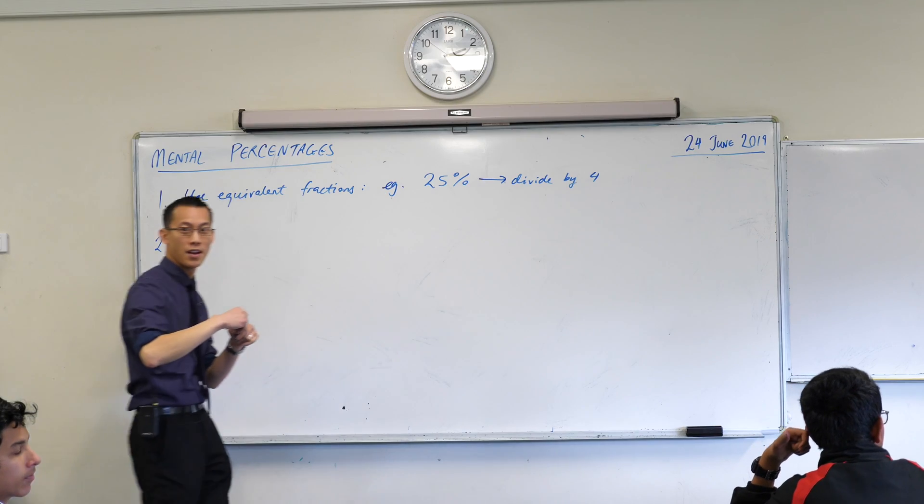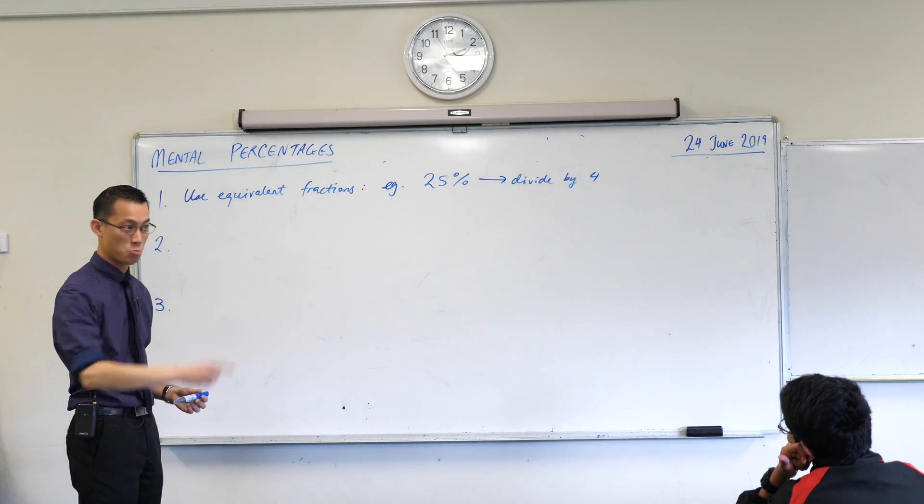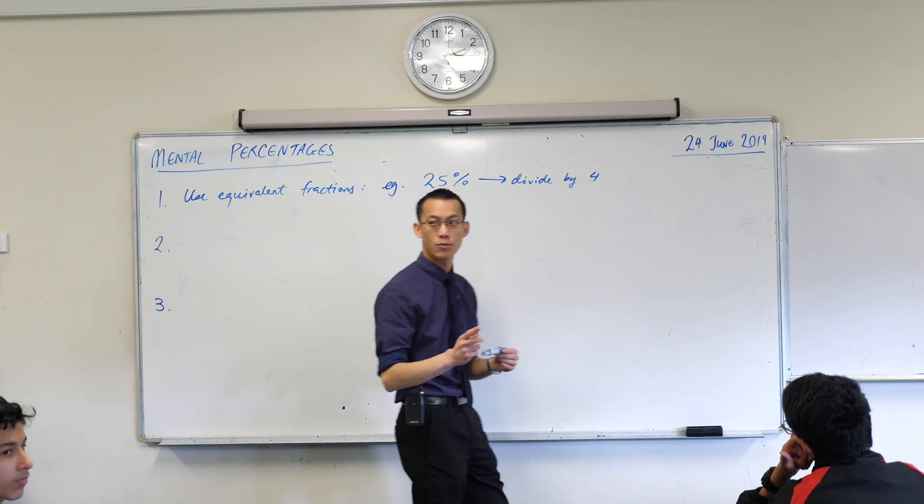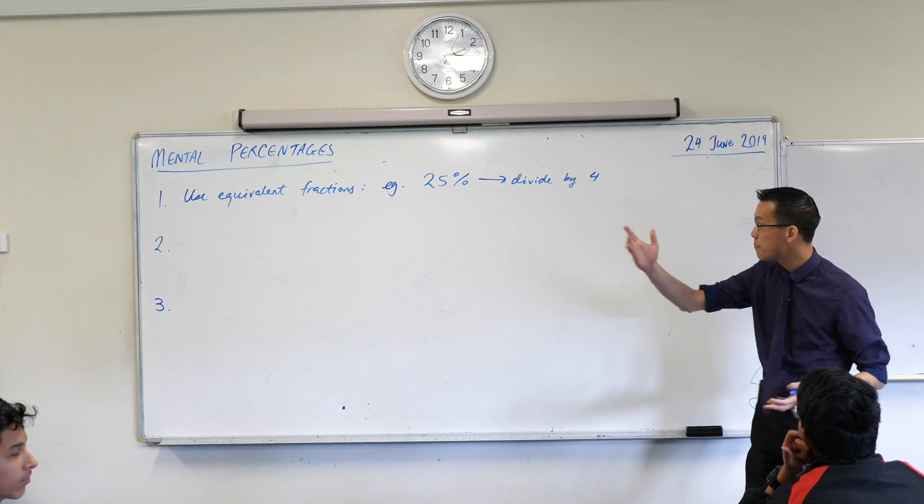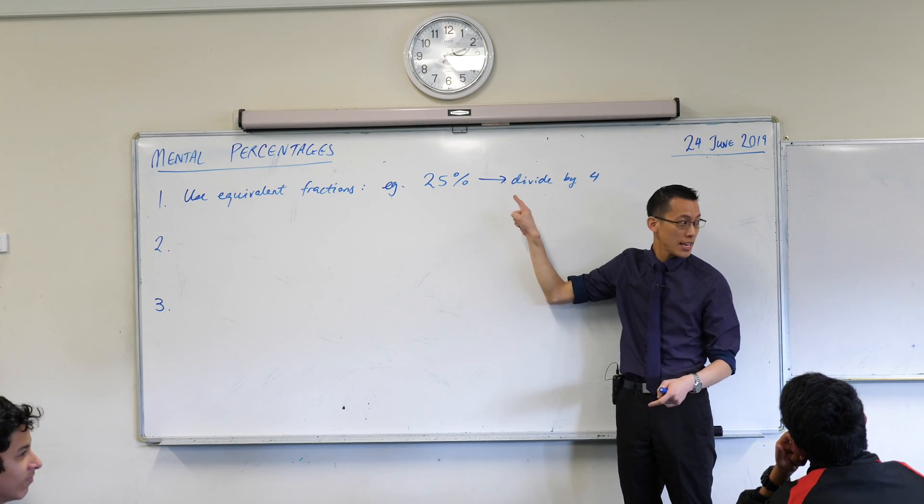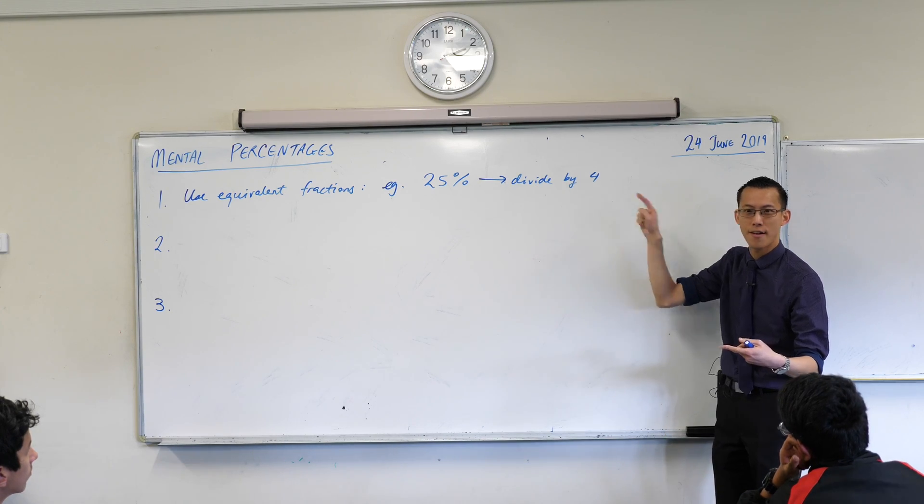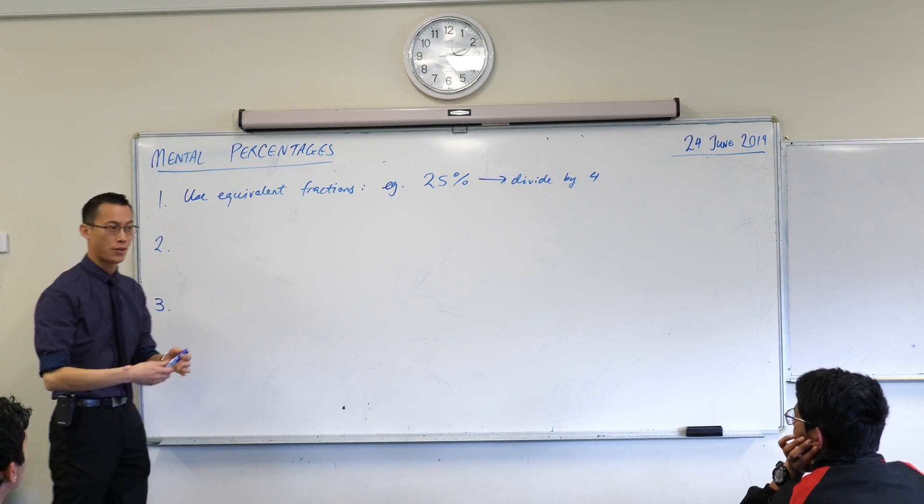Louise, 100%, so the equivalent fraction is one over one, you don't need to do any calculation. Can someone give me one more? Merrick, 20%. So if I saw 20% of a thing, what would be the equivalent fraction? I should divide by five, very good. So when you can spot an equivalent fraction, use it. Very good tip number one.